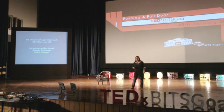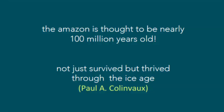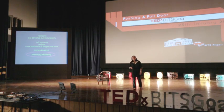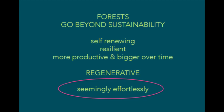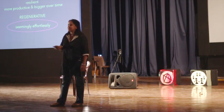The Amazon is thought to be nearly a hundred million years old — it not only survived the ice age but thrived through it. Forests are extremely resilient, self-renewing, and they get better and more productive over time. They go beyond sustainability into what we call regenerative systems, and the forest does this seemingly effortlessly.